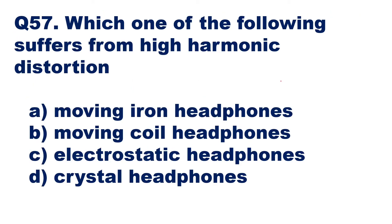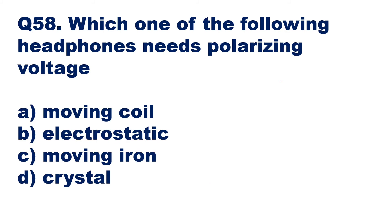Question 57: which one of the following suffers from high harmonic distortion? Options are moving iron headphones, moving coil headphones, electrostatic headphones, or crystal headphones. High harmonic distortion is seen in moving iron headphones — option A is the right answer. Question 58: which headphones need polarizing voltage? Options are moving coil, electrostatic, moving iron, or crystal. Moving coil headphones require polarizing voltage — option A is the right answer.